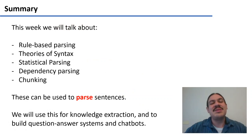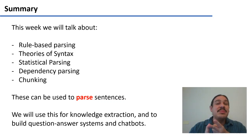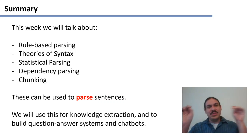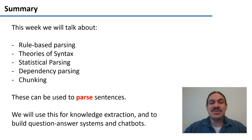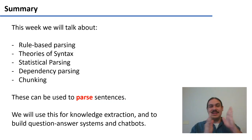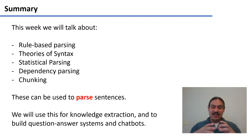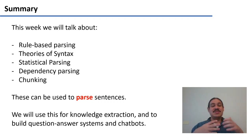This week we'll talk about parsing: rule-based parsing, deep learning parsing briefly, and statistical parsing. We'll cover dependency parsing — figuring out which words depend on which — and chunking, which is identifying big parts of a sentence. We're going to do this to perform knowledge extraction, where we extract information about entities to use in systems like chatbots or question-and-answer systems.